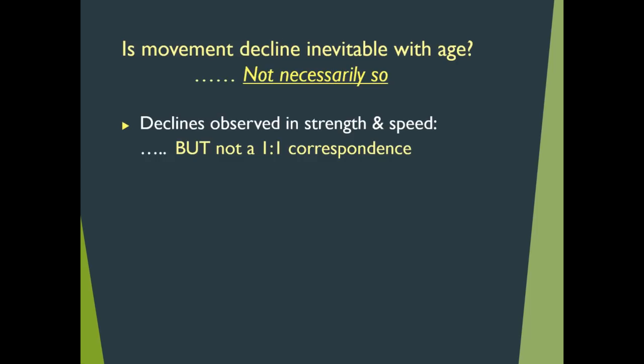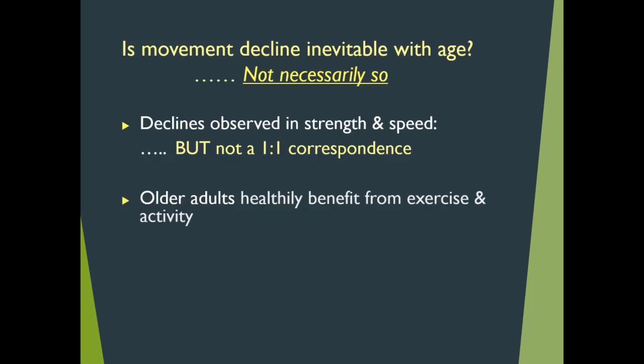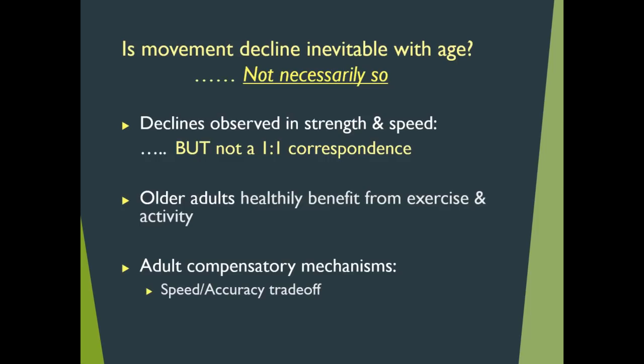For people like Michael Jordan, Wayne Gretzky, Mario Lemieux — any retired athletes who continue working out and taking care of their bodies — my assumption is that the one-to-one correspondence is not the same as the normal population. In fact, older adults healthily benefit from exercise and activity. Additionally, adult compensatory mechanisms are known to continue allowing the elderly to flourish despite their noted slowing down and reduction of strength. This is classically known in motor learning as the speed and accuracy trade-off.